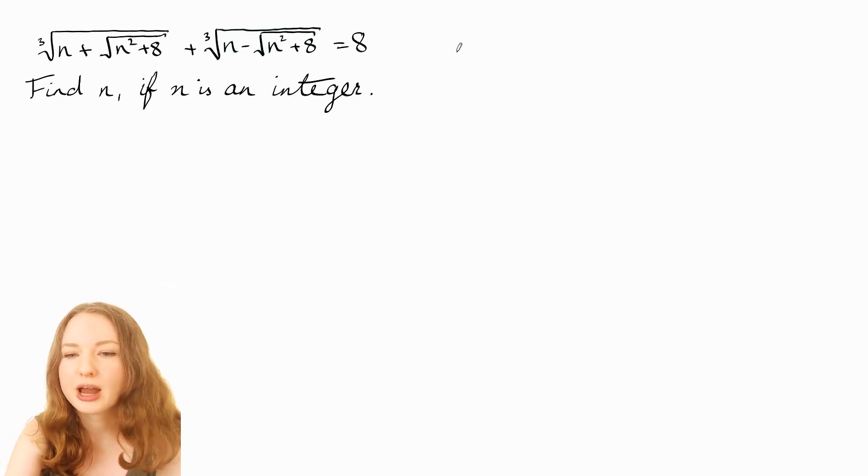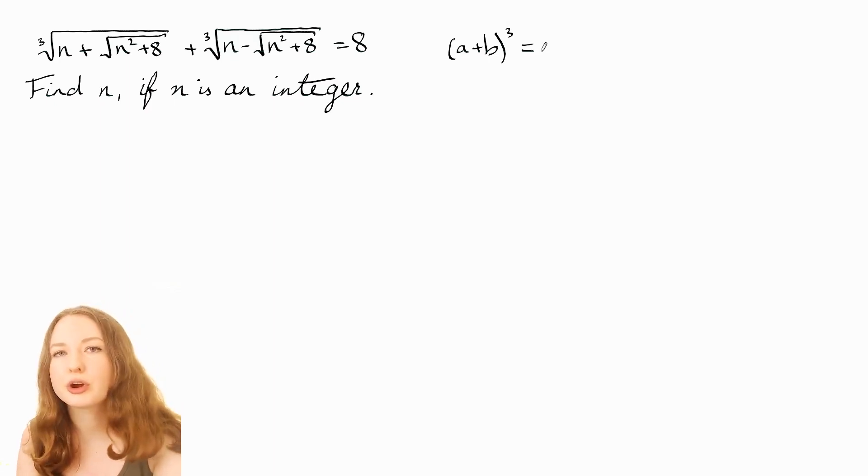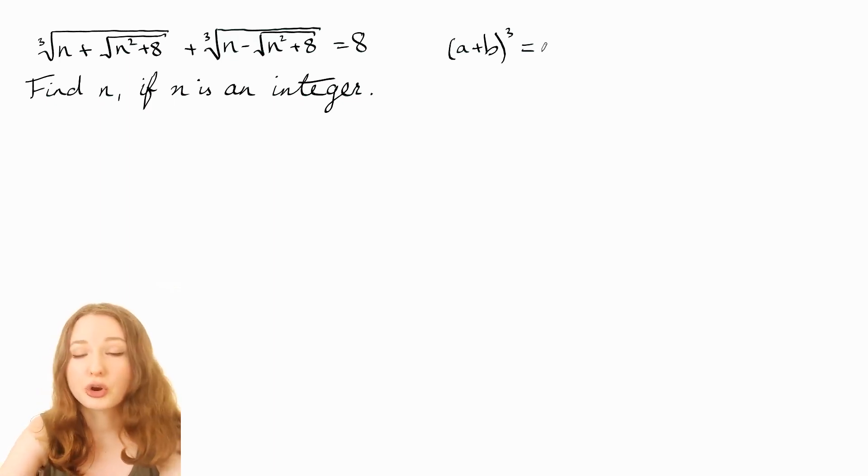But first let's just review what happens when you cube something like a plus b. So you may have learnt the binomial theorem or you may have just seen the expansion of this before. If you don't know how to expand that, what you can do is think of it as (a+b)² and then multiply that by (a+b).